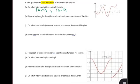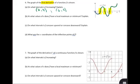In part b, it asks at what values of x does f have a local maximum or a local minimum. A local max or min is where the function changes from increasing to decreasing. It's also going to have zeros, but just because it's a zero doesn't necessarily mean it's changing from increasing to decreasing or decreasing to increasing. It looks like we have three places, and x equaling 2, 4, and 6 are going to have a local max or a local min.